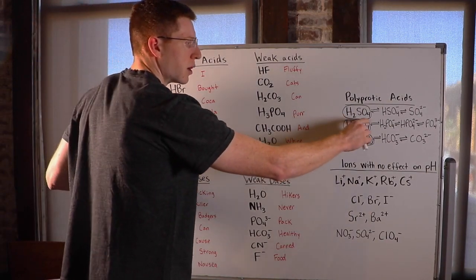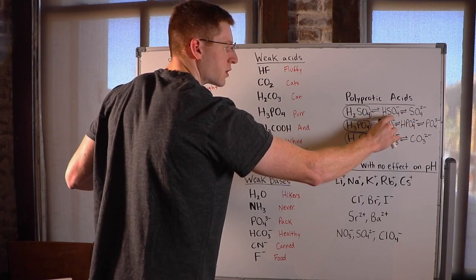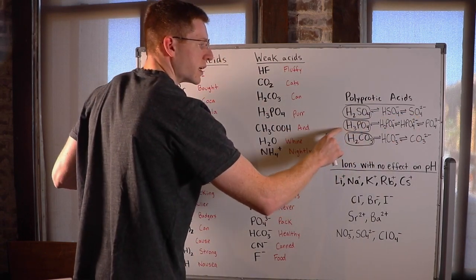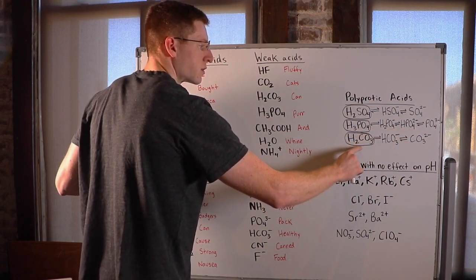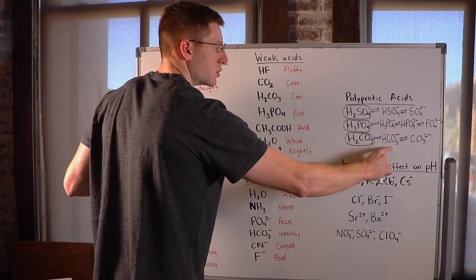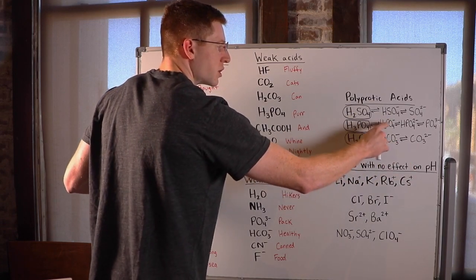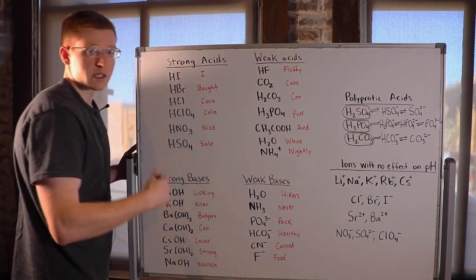You can see H2SO4 can donate two protons: first donation and second donation. H3PO4 has three H's, so it can donate three protons. And then H2CO3 has two protons, so it can donate twice. And after each donation, the acid actually gets weaker.